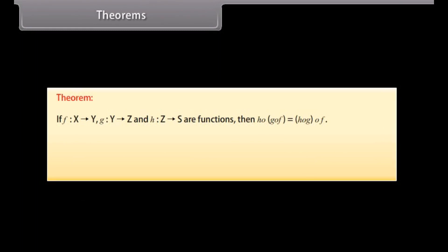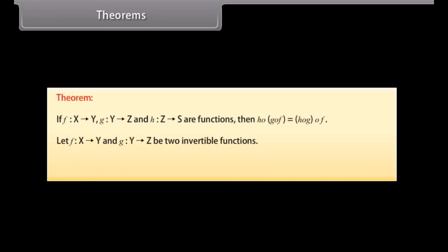Theorems: If functions f from X to Y, g from Y to Z, and h from Z to S are functions, then h∘(g∘f) = (h∘g)∘f. Also, let f from X to Y and g from Y to Z be two invertible functions. Then g∘f is also invertible with (g∘f)⁻¹ = f⁻¹∘g⁻¹.